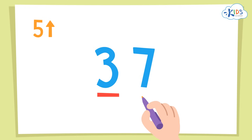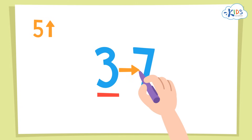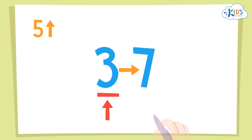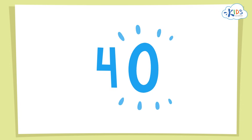But for 37, since we're only rounding to the tens, we'll have to look at the number in the ones place. Since that number is a seven, we're going to round up because seven is greater than five. We'll round 37 up to 40. You round the number in the tens place and make the number in the ones place a zero.